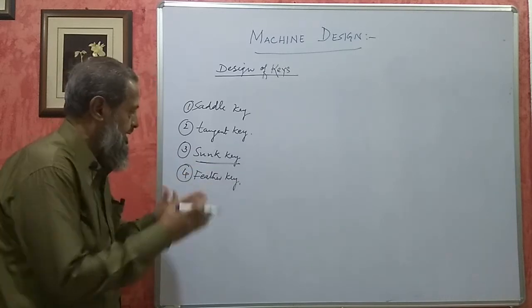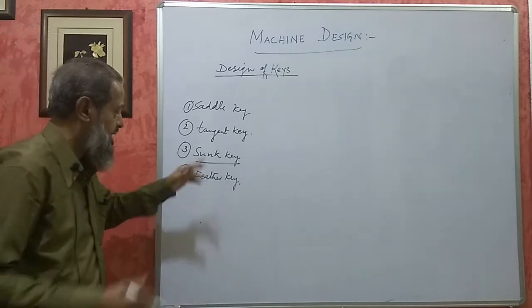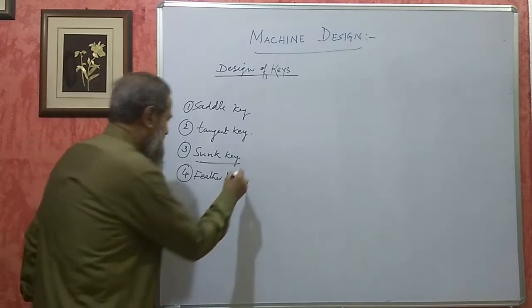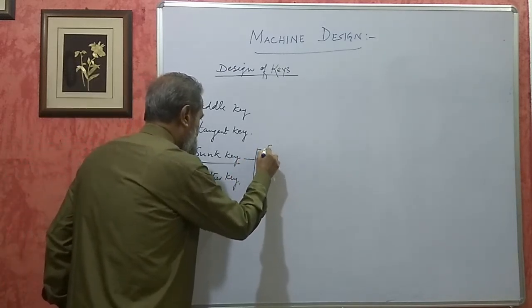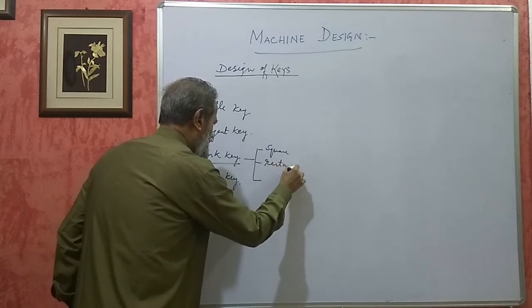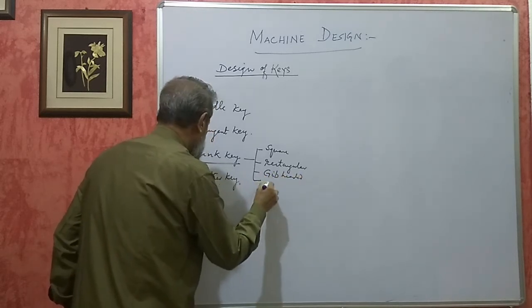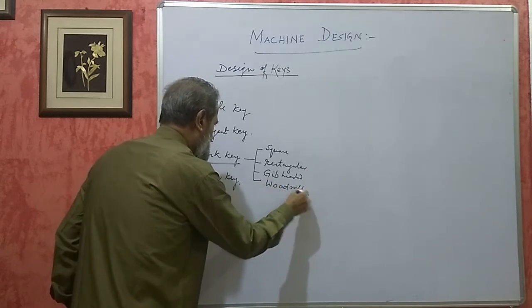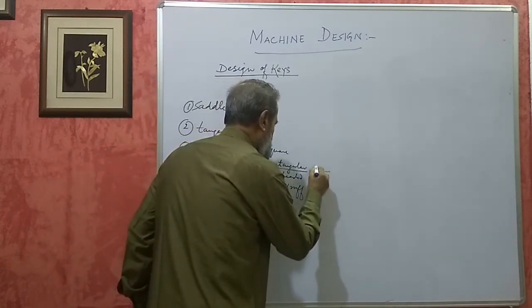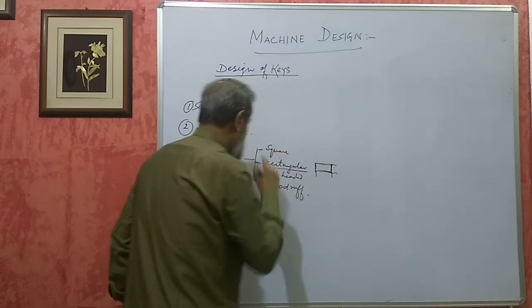A sunk key means it will be partly in the shaft and partly in the hub of the pulley or gear wheel — half in the shaft and half in the hub. Sunk keys are again of different types: square sunk key, rectangular sunk key, gib headed sunk key, and woodruff key. The one most commonly asked to design is the rectangular sunk key — its cross-section is rectangular. This dimension is called the width of the key and this is called the thickness or depth of the key.